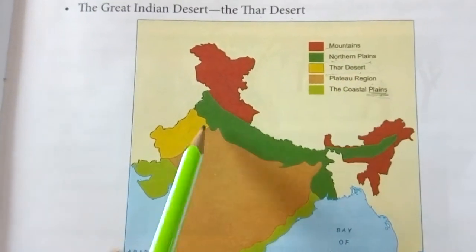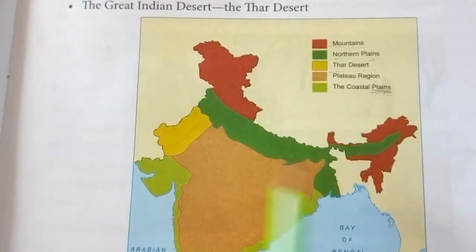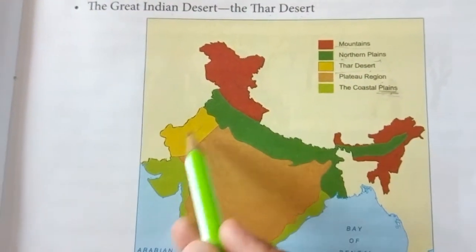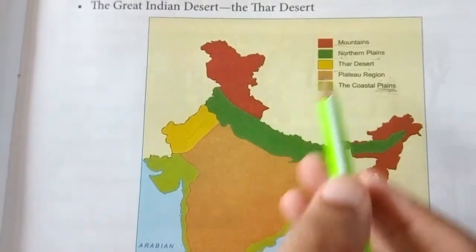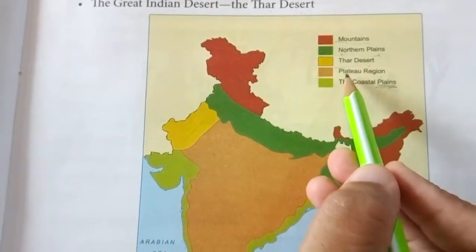Where is the Thar Desert? See this area — the yellow area is the Thar Desert.